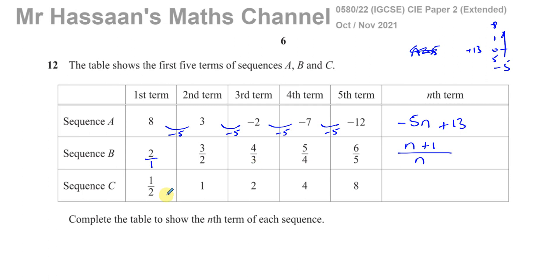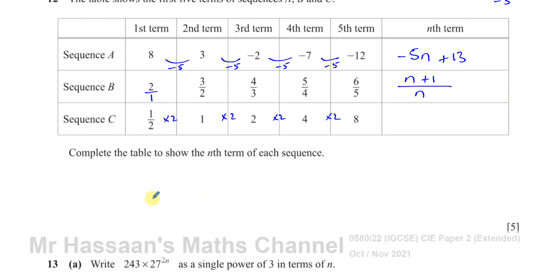For sequence C, we have 1/2, 1, 2, 4, 8. You multiply by the same number each time: 1/2 × 2 = 1, 1 × 2 = 2, 2 × 2 = 4, 4 × 2 = 8. This is a sequence where you multiply by the same number each time — an exponential sequence. So it's going to involve 2 to the power of n, since 2 is the number you're multiplying by each time.